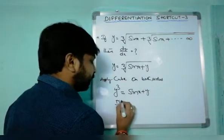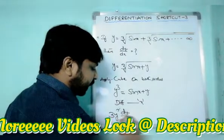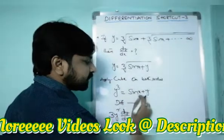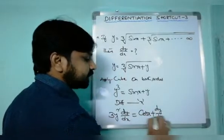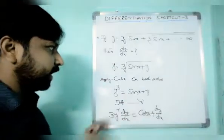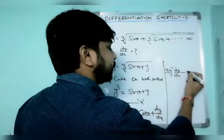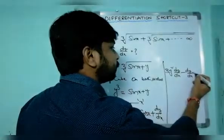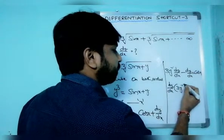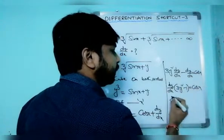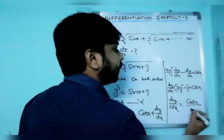Now differentiate with respect to x. The derivative of y³ is 3y² dy/dx, which equals cos x plus dy/dx. Rearranging, bring dy/dx to one side: 3y² dy/dx minus dy/dx equals cos x. Taking dy/dx common gives dy/dx times (3y² minus 1) equals cos x.